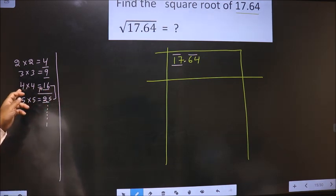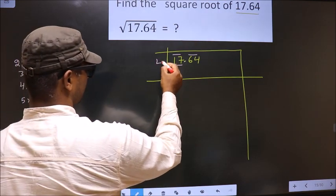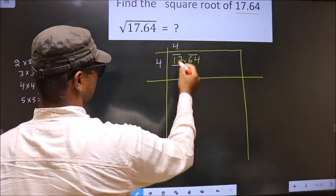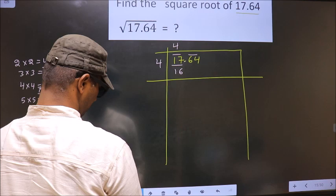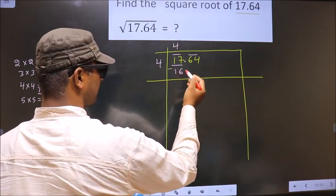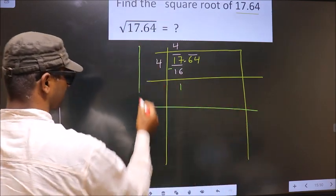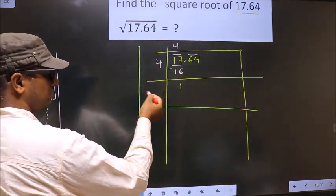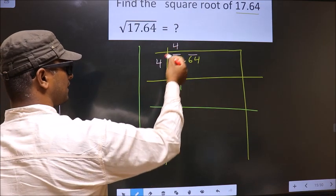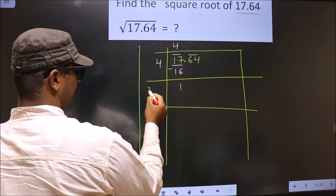16 is 4, 4 times 4. So you take 4 times 4, 16. Now you subtract 17 minus 16 is 1. Now here we should add these two numbers and we should write here. So 4 plus 4, 8.